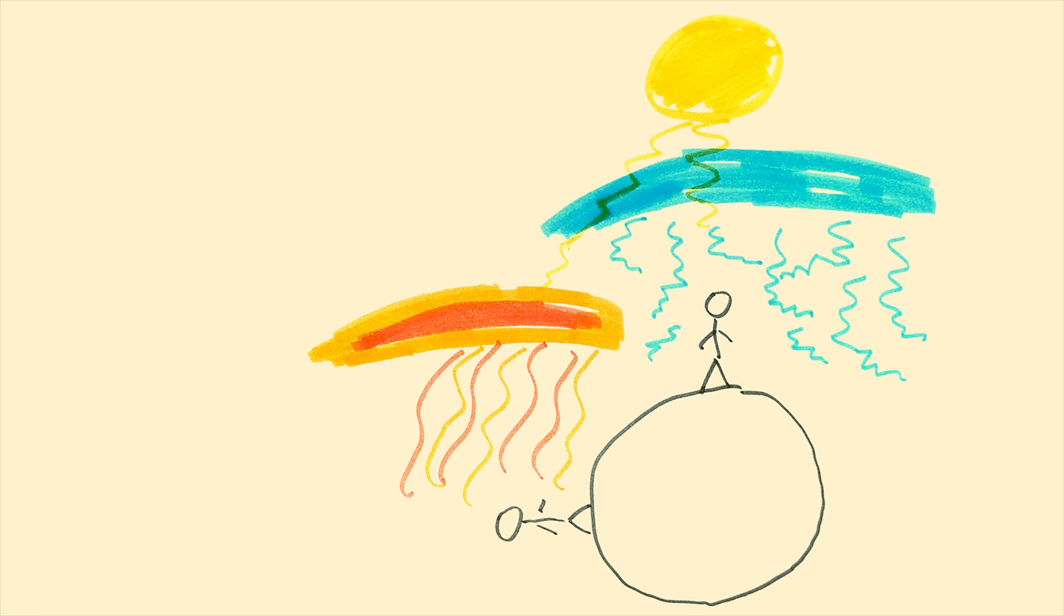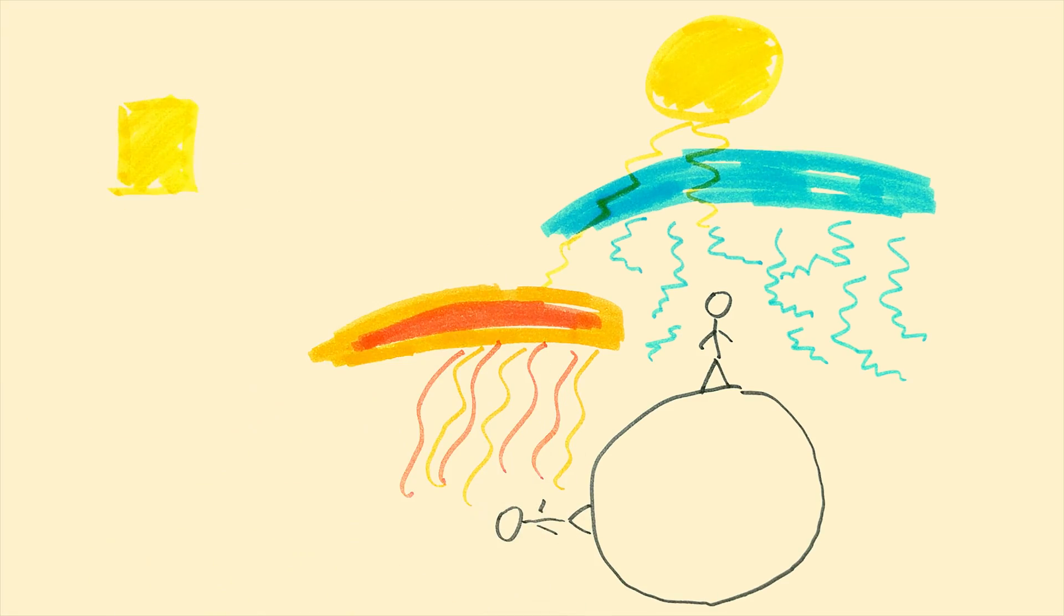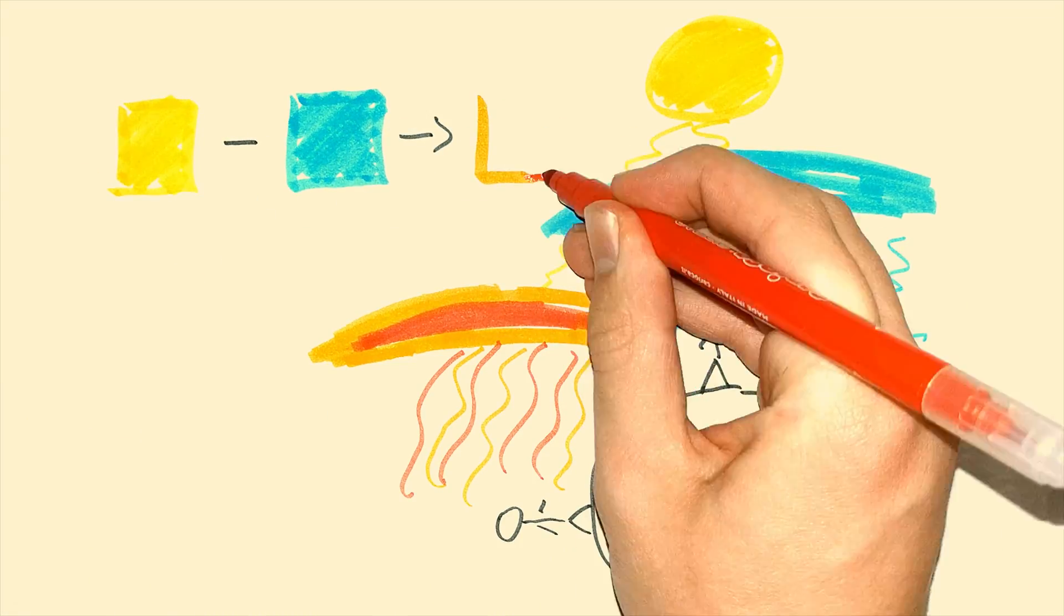At sunset, light passes through so much atmosphere, the possibility of some blue light traveling that far is very small, and if you subtract the blue light from the white light, you get just the orange-red.